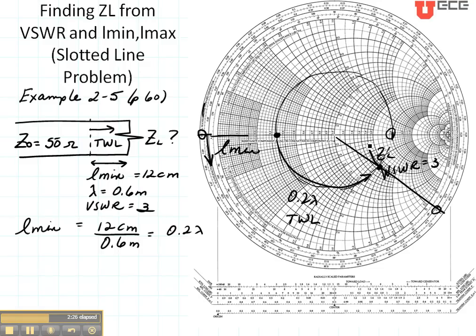Let's read its value. It looks like its real part is about 1.8 and its imaginary part is about 1.2. In order to get this to ohms, I'm going to multiply that by Z0, which is 50 ohms.